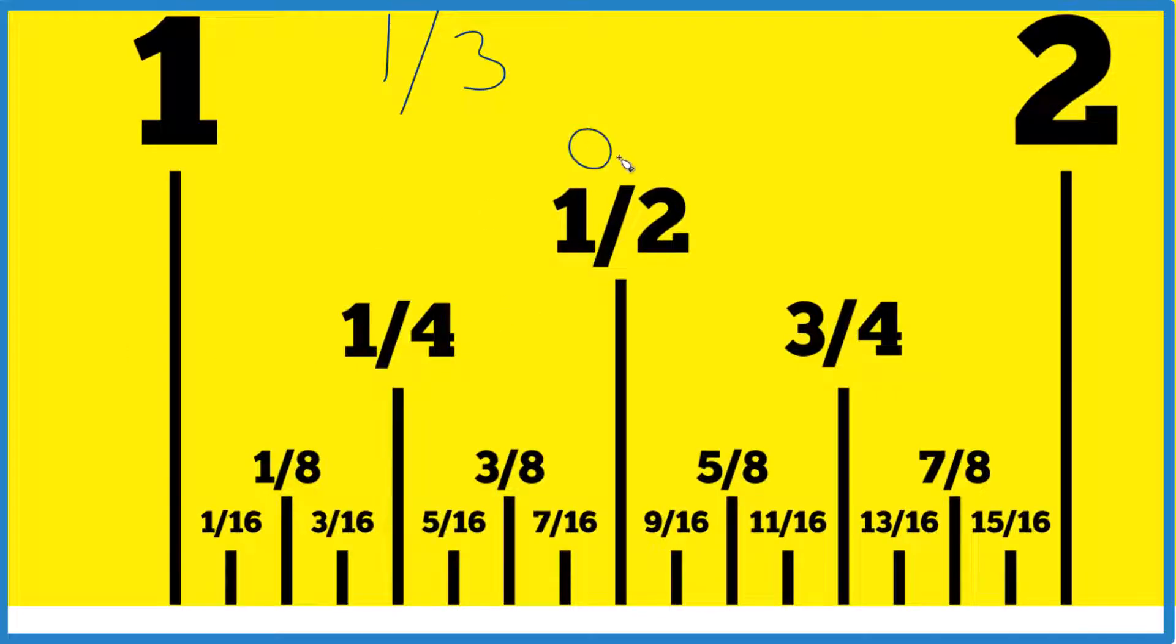We know that one-half is 0.5 and one-fourth is 0.25. If you don't know that, just divide one by four in your calculator. We know that one-third is going to be between these two numbers, one-half and one-fourth, probably closer to one-fourth.